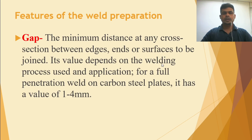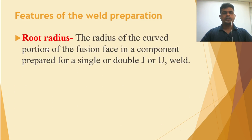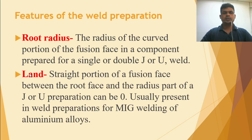What is the root radius? For a U or J preparation, it is the radius of the curved portion of the fusion face in a component prepared for a single or double J or U weld. What is the root length? It is a straight portion of the fusion face between the root face and the radius part of a J or U preparation. It can be zero and is usually present in weld preparation for MIG welding of aluminium alloys.